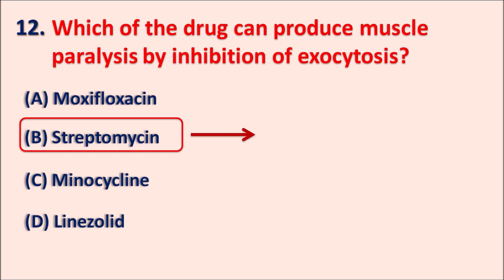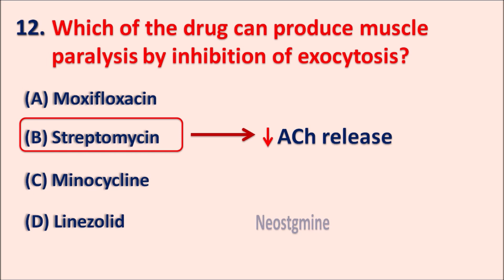When acetylcholine is not released, muscle contraction is prevented, producing muscle paralysis. At toxic doses, streptomycin can produce muscle paralysis leading to neurotoxicity. Such conditions can be treated with neostigmine, which is an acetylcholinesterase inhibitor that increases acetylcholine levels, resulting in increased nicotinic action and thereby relieving the muscle paralysis produced by streptomycin.